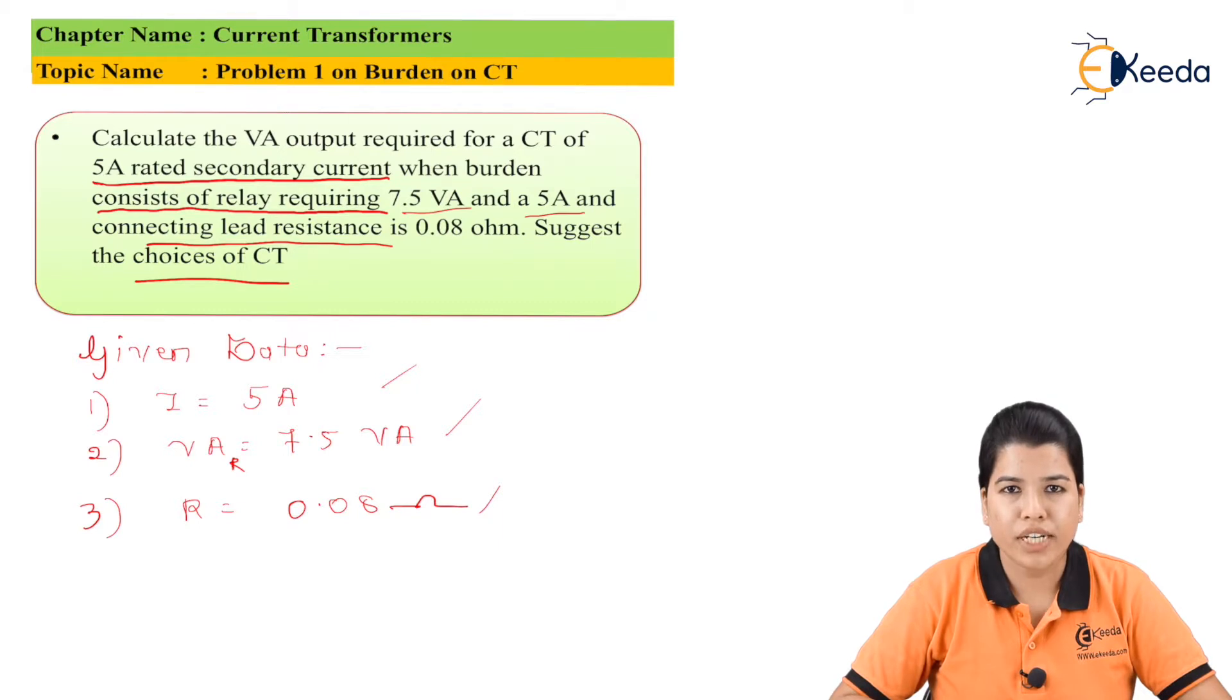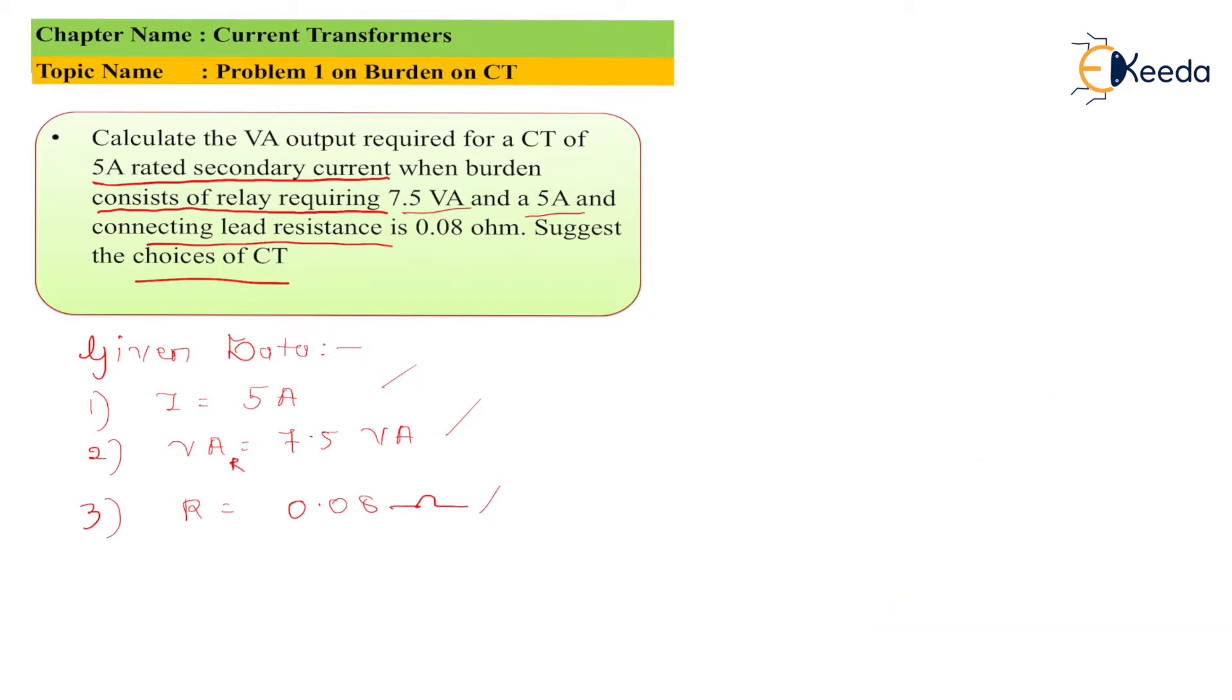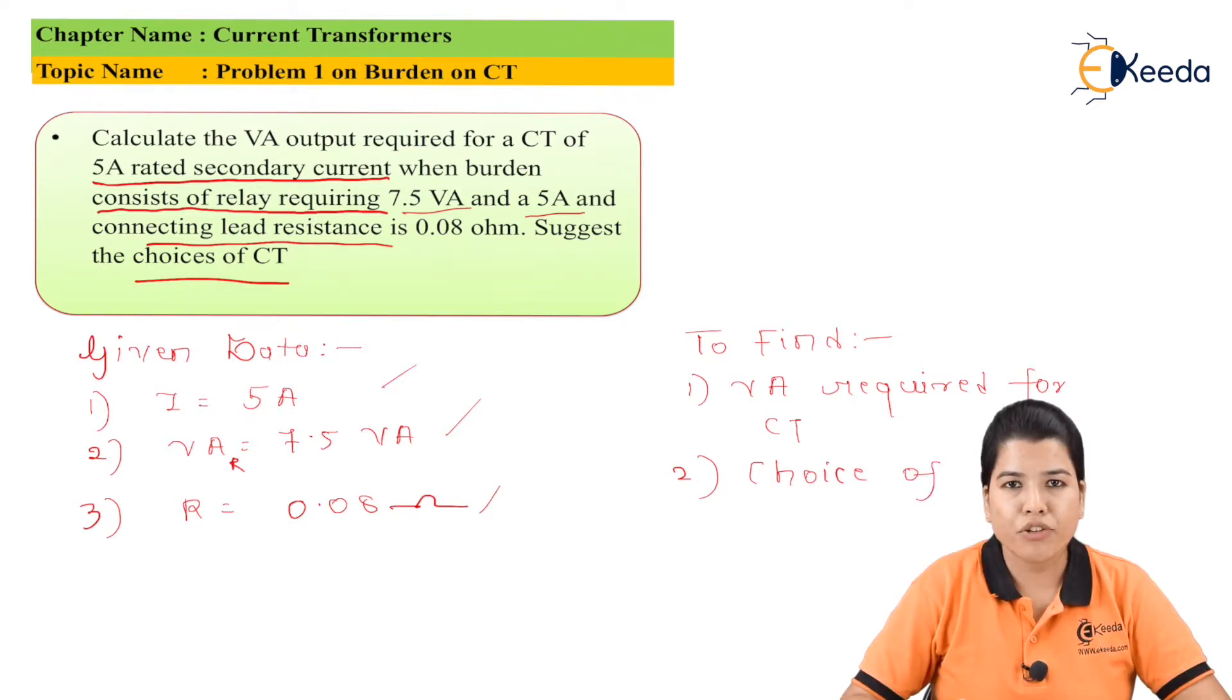Now let us see what we have to determine in this problem. We have to find VA required for CT and second, the choice of CT.